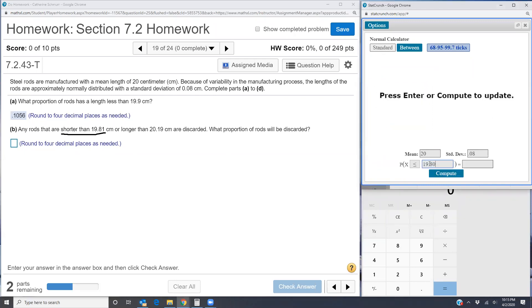For the shorter than I want x is less than or equal to 19.81. I'm going to change the x value over here to 19.81 and I get 0.0088. I'm going to write that down because you got to keep track of that number 0.0088. That's the proportion that is shorter than 19.81.